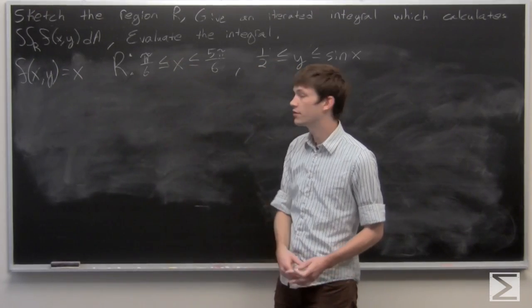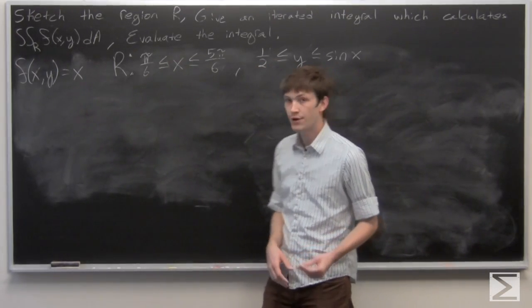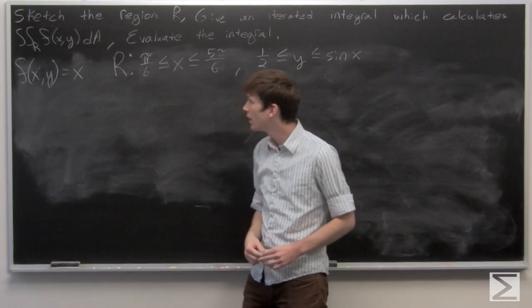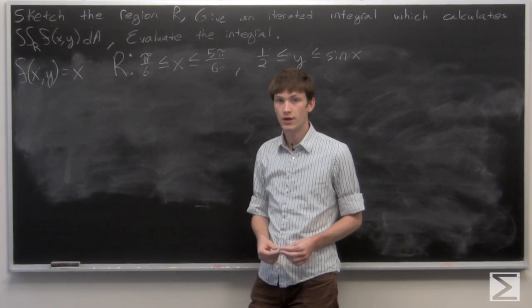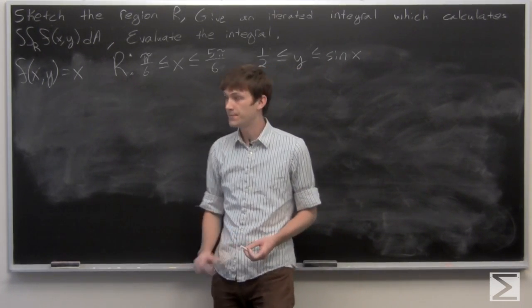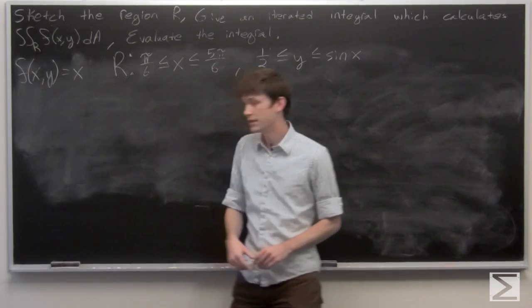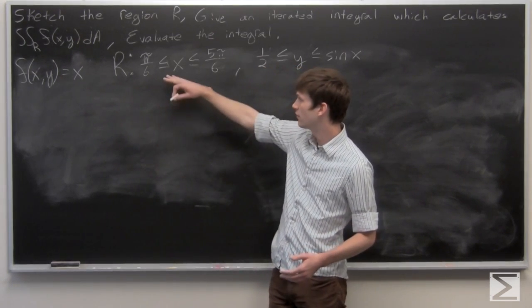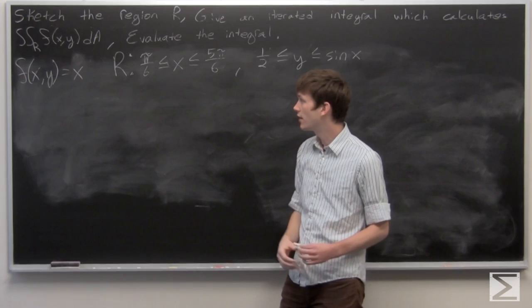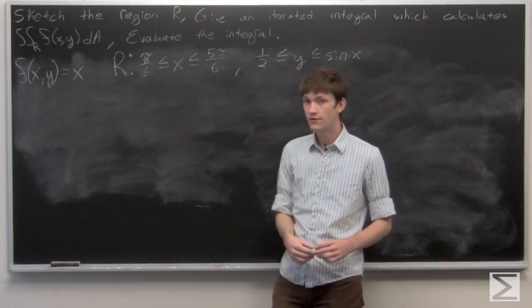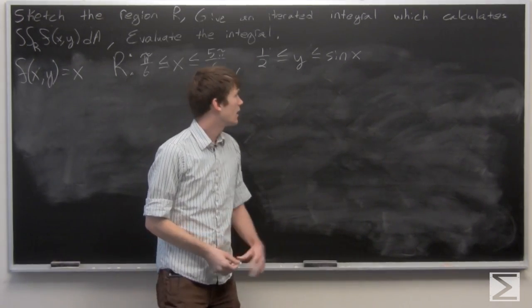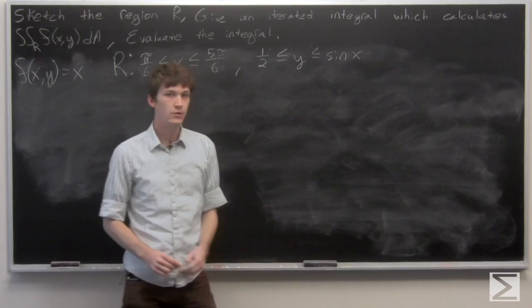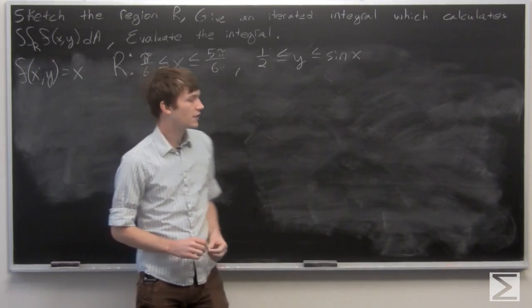In this problem we're asked to sketch our region R and give an iterated integral to calculate the double integral of f over our region R, and then evaluate our iterated integral. We're given that our function f is a function of just x, and our region R is defined where x is between π/6 and 5π/6, and y is greater than or equal to 1/2 and less than or equal to sine of x.